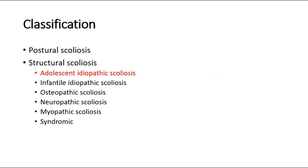Scoliosis can be classified into postural and structural scoliosis. In postural scoliosis, the deformity is secondary or compensatory to another condition outside the spine. Examples include one leg shorter than the other, causing postural scoliosis, or pelvic tilt due to contracture of the hip. When the patient sits down, cancelling the asymmetry of leg length, the curve will disappear.